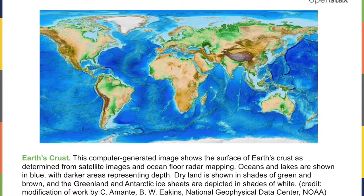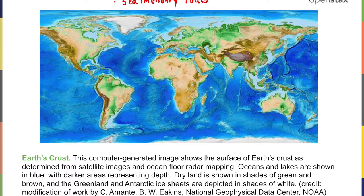The crust is composed of four key types of rocks: igneous, sedimentary, metamorphic, and primitive rocks. These four types make up everything on the surface of Earth — everything the ocean sits on, all the continents are made out of one of these four types.